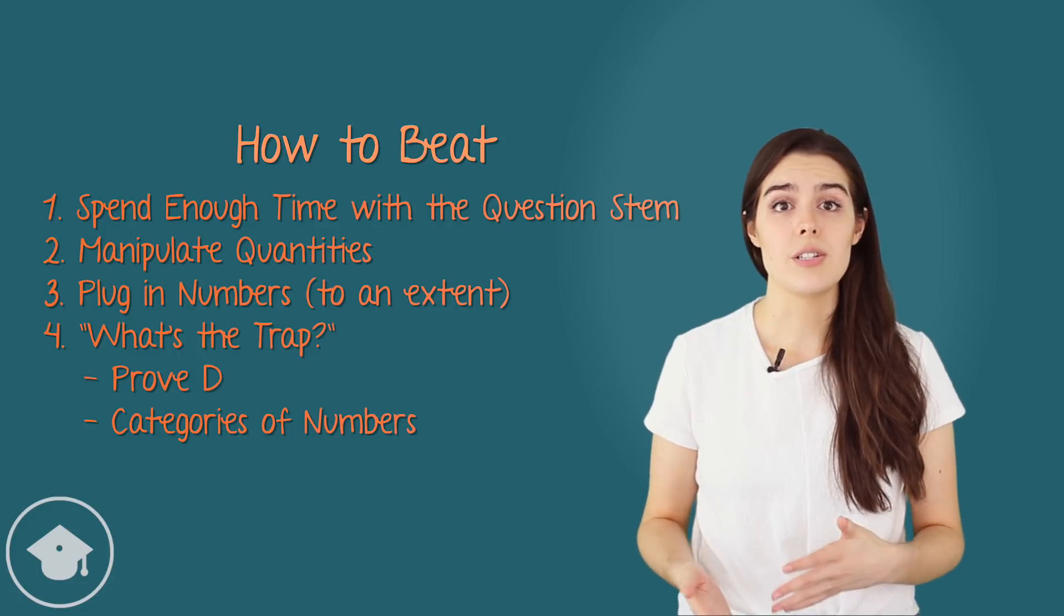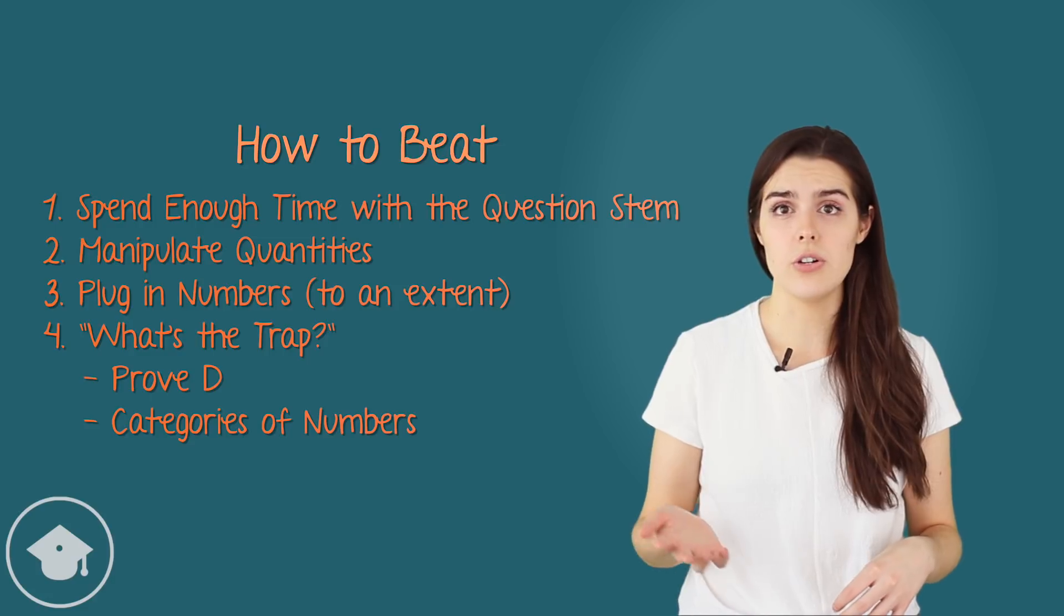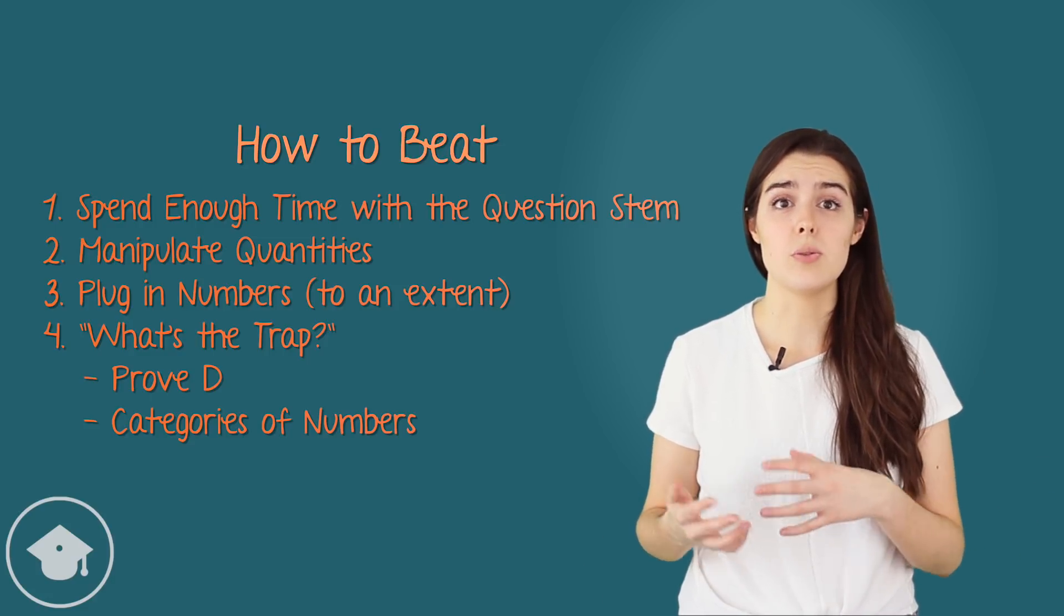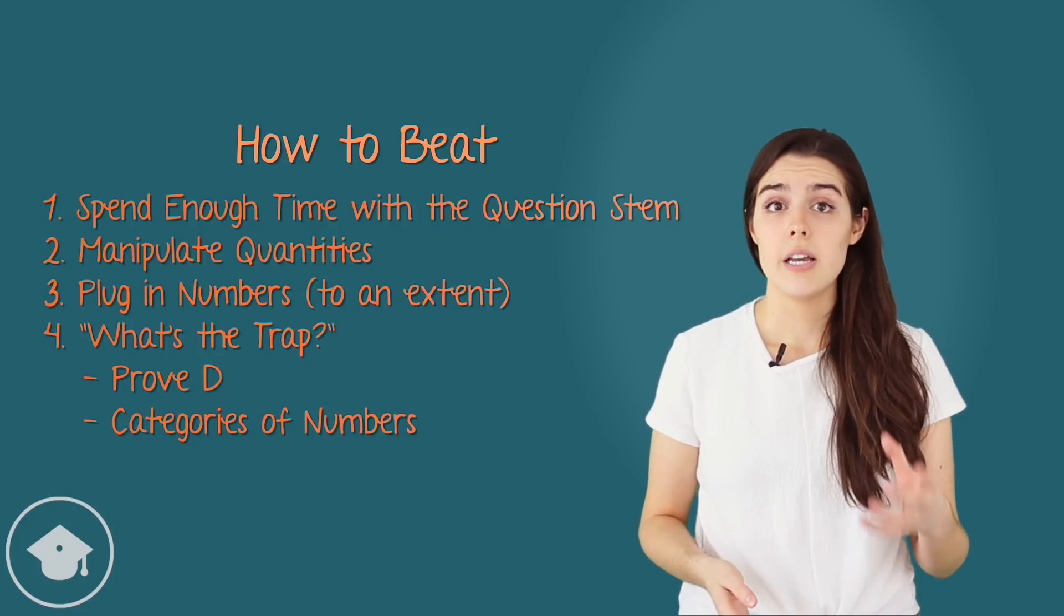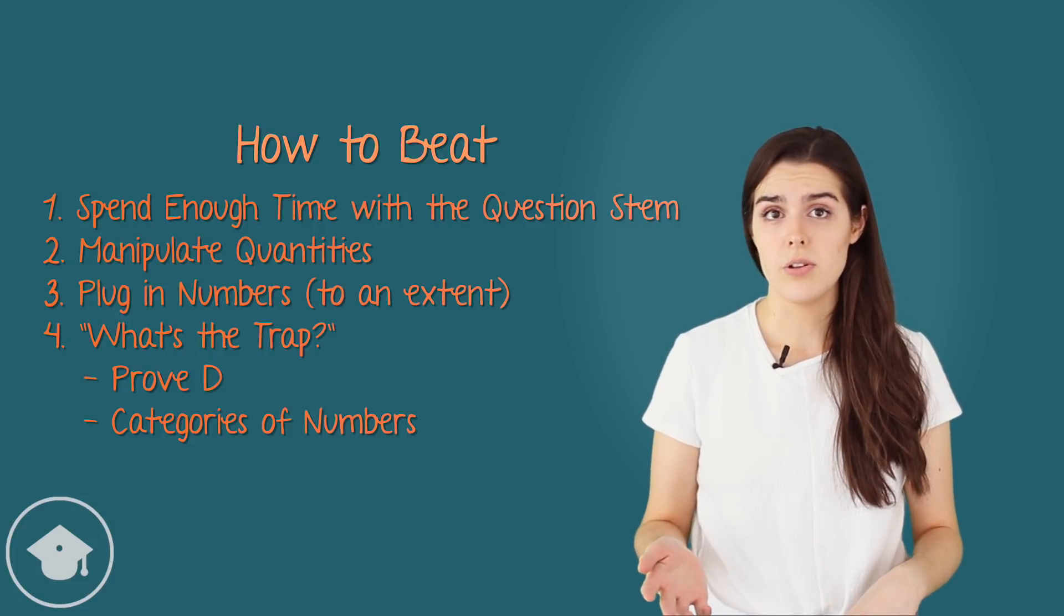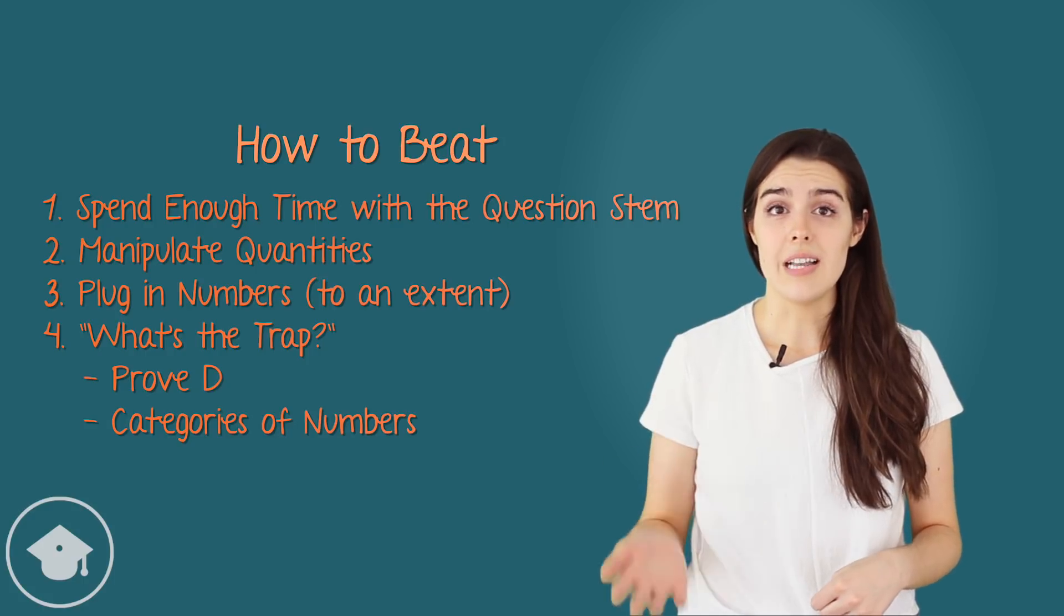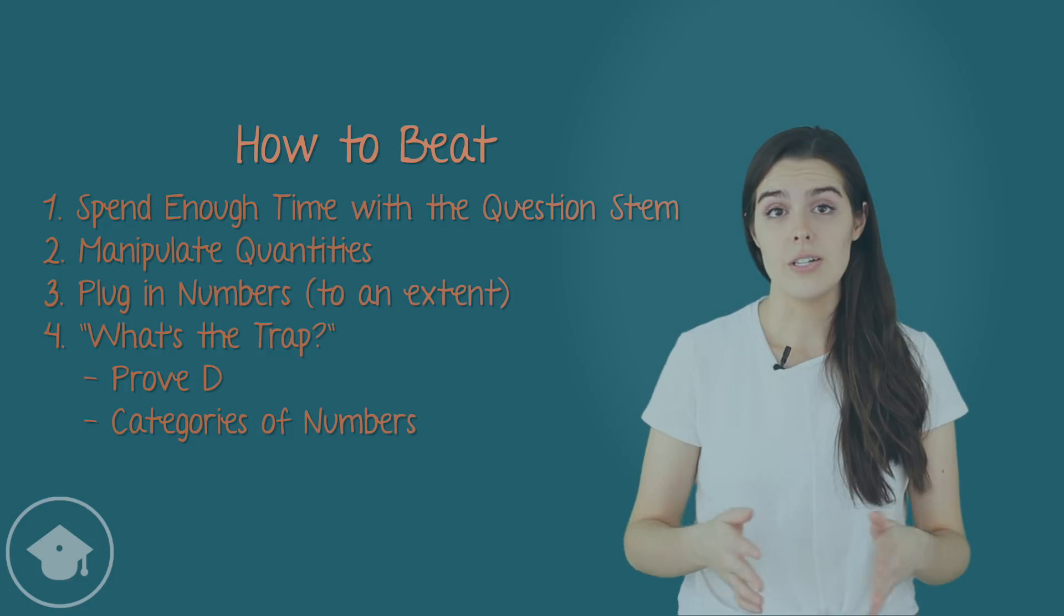Oftentimes, one category of numbers will yield a certain relationship, while another category of numbers will yield another. So important categories to think about testing are positive versus negative, greater than one versus between zero and one, as well as less than negative one versus between negative one and zero, even versus odd, integer versus non-integer, multiple of x versus non-multiple of x, maximum value versus minimum value, greater magnitude versus lesser magnitude compared to another number in the problem.